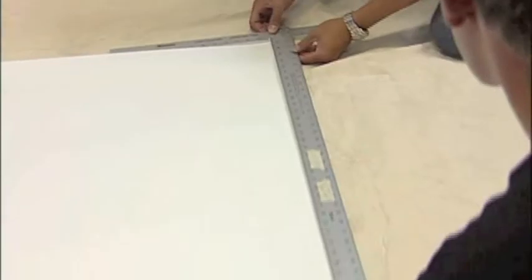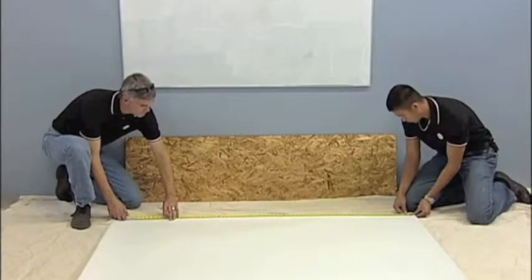Using a T-square, our installers are working from the factory prepared edges to carefully match the shape of the final Versapro material to the existing chalkboard.